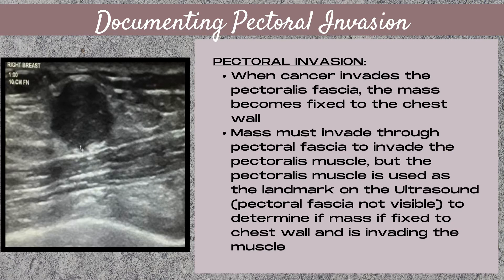When cancer invades the pectoralis fascia, the mass becomes fixed to the chest wall. Note that the mass needs to invade through the pectoral fascia in order to invade the pectoralis muscle. But on ultrasound we use the pectoralis muscle as the landmark because you can't visualize the pectoral fascia.